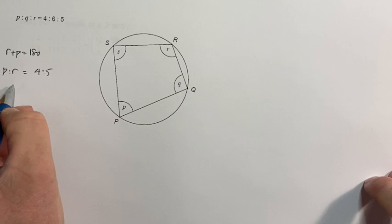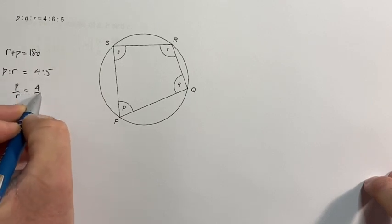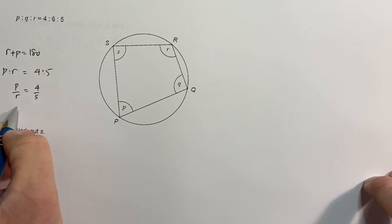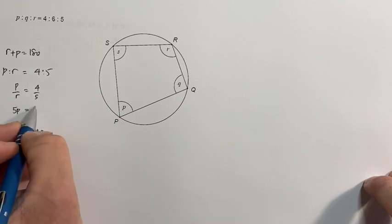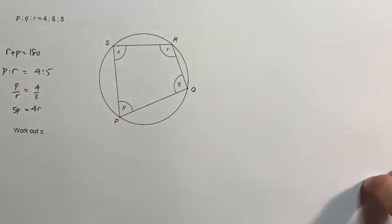Therefore, p divided by r is the same as 4 fifths, which means that if I bring the 5 across times 5, p, take the r across times r, must equal 4r. If I solve these two simultaneously...